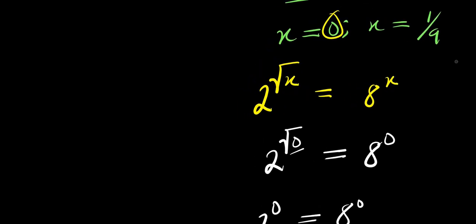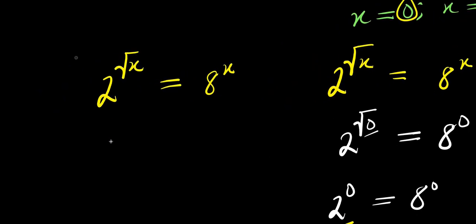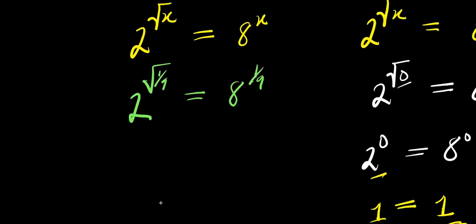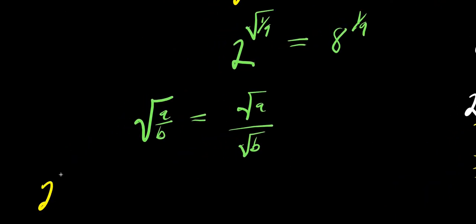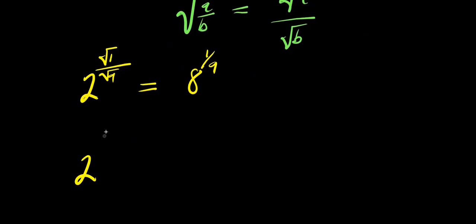Now let's consider when x equals 1 over 9. We substitute into 2 to the power of square root of x equals 8 to the power of x. For the square root of 1 over 9: if you have square root of a over b, this equals square root of a divided by square root of b. So our a is 1 and b is 9, giving square root of 1 divided by square root of 9.